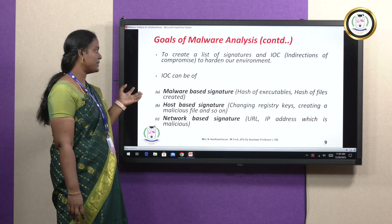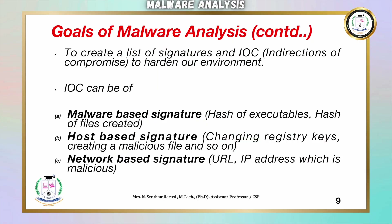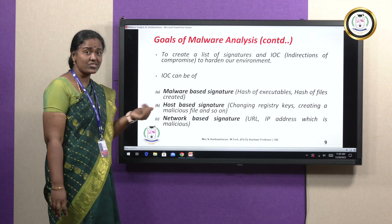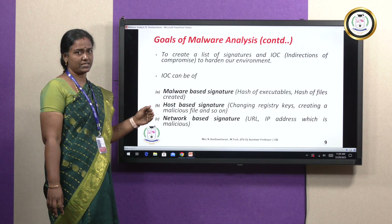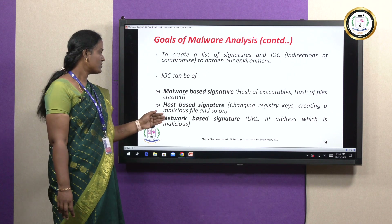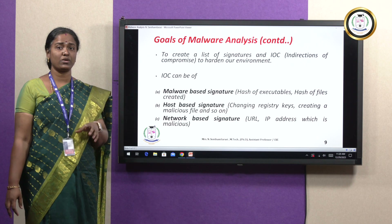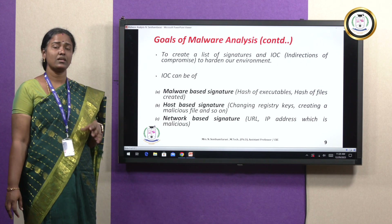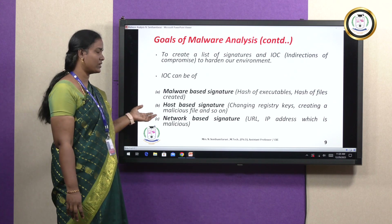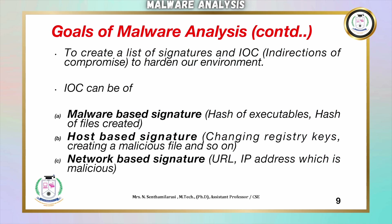The next type is host-based signature. This involves changing registry keys by creating malicious files, and that comes under host-based signature. Lastly, we have network-based signature. By clicking some URL or some IP address, Malware gets installed on our system — that type comes under network-based signature. These are some few Indicators of Compromise.